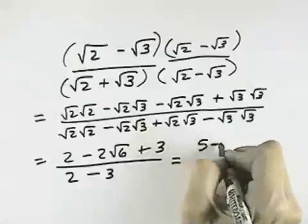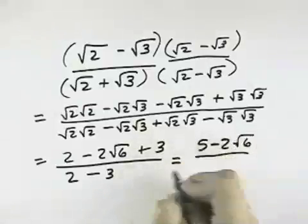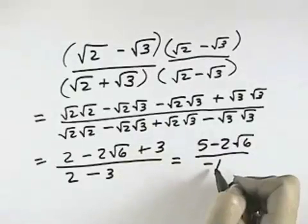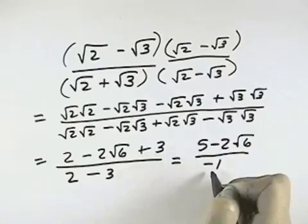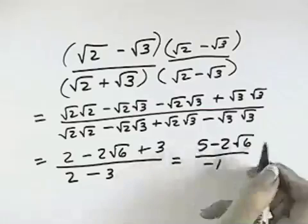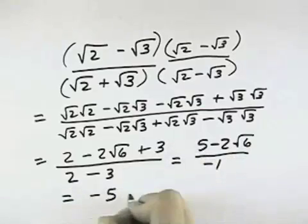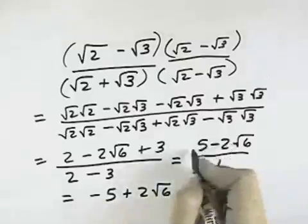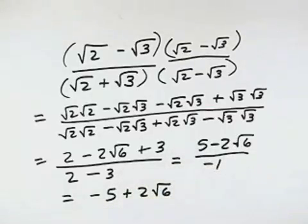So the numerator is 5 minus 2 times the square root of 6, while the denominator is 2 minus 3, or negative 1. But I don't need to leave a negative 1 in the denominator. I could instead multiply by negative 1 over negative 1, which distributes the negative over the numerator, to give me negative 5 plus 2 root 6, by changing both signs in the numerator — that cancels the negative out of the denominator.